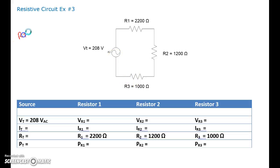So RT here is going to be equal to 2200 plus 1200 plus 1000. I'm all over the lab here. RT is going to be equal to 4400 ohms, so we'll drop that in here.